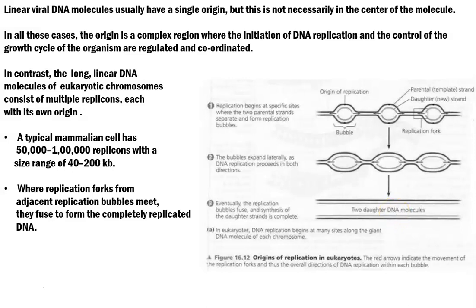In a typical mammalian cell there are more than 50,000 to 100,000 replicons present within a 40 to 200 kb region of the genome. This is why multiple origins of replication are commonly present in the linear chromosomes of eukaryotic cells. During replication, the replication forks from adjacent replication points — that is, the replication bubbles — meet together and coalesce or fuse to form a completely replicated DNA structure. These are the important steps in which eukaryotic linear DNA molecules are synthesized.